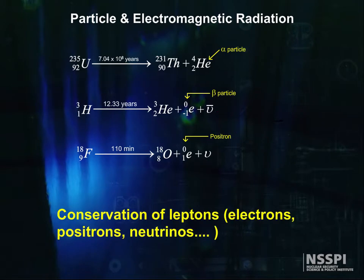There is another conservation law known only to nuclear types, known as the conservation of leptons. Electrons, positrons, neutrinos, among other particles, fall into this lepton class.